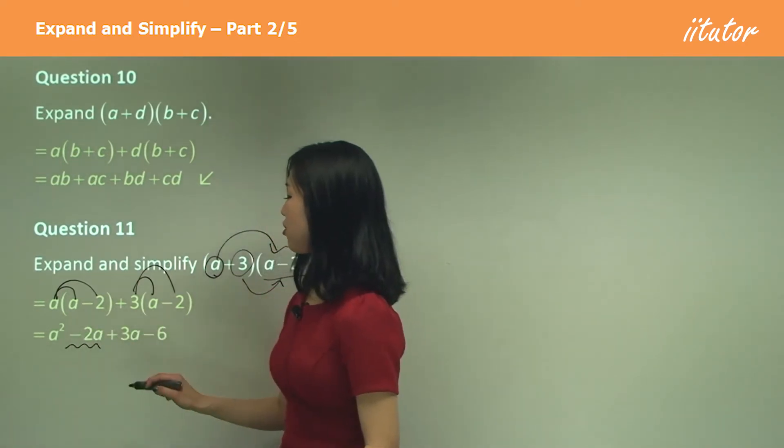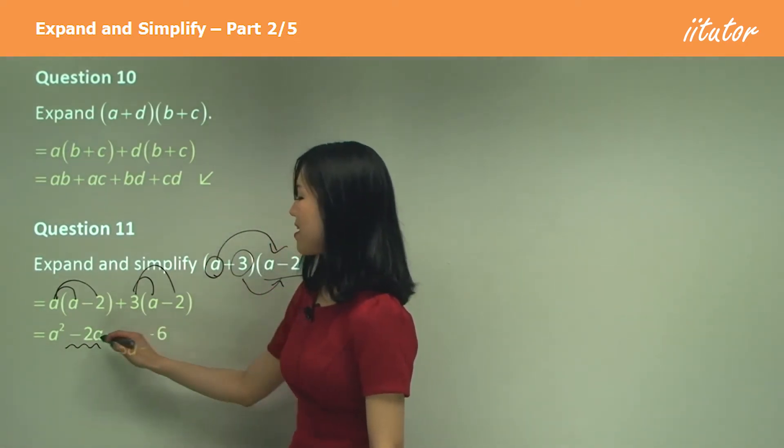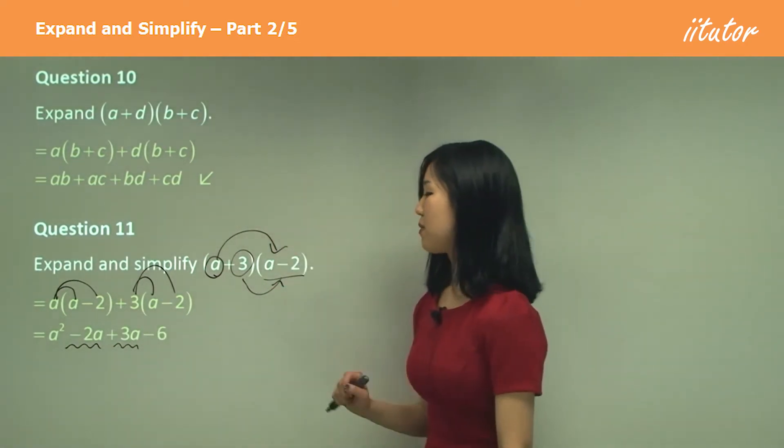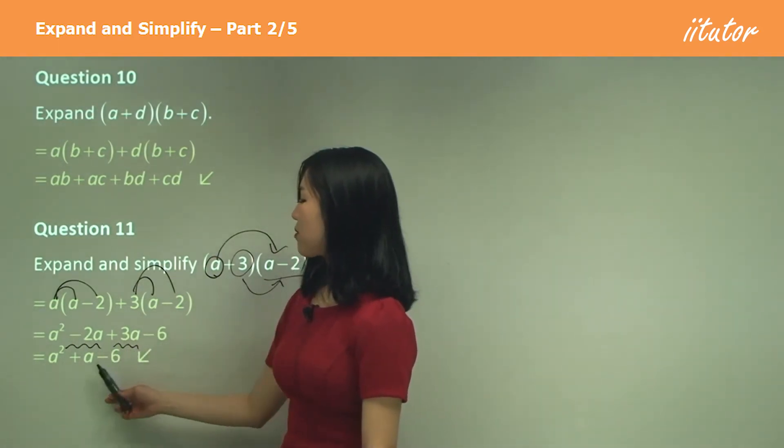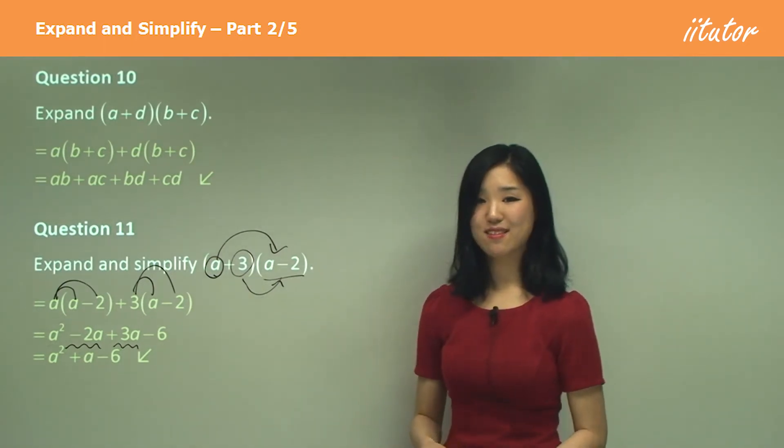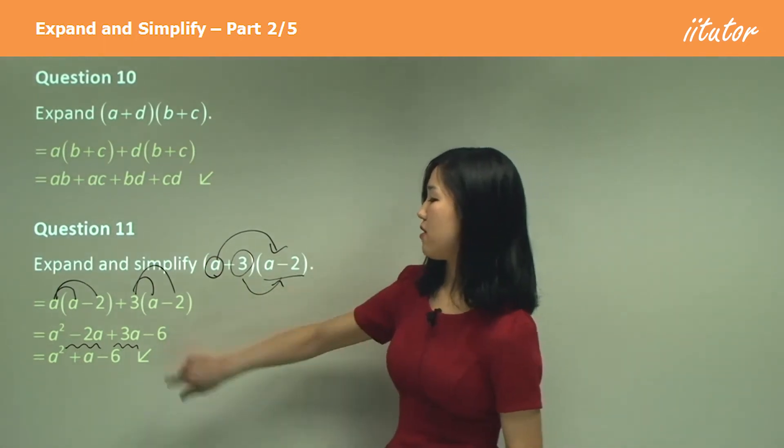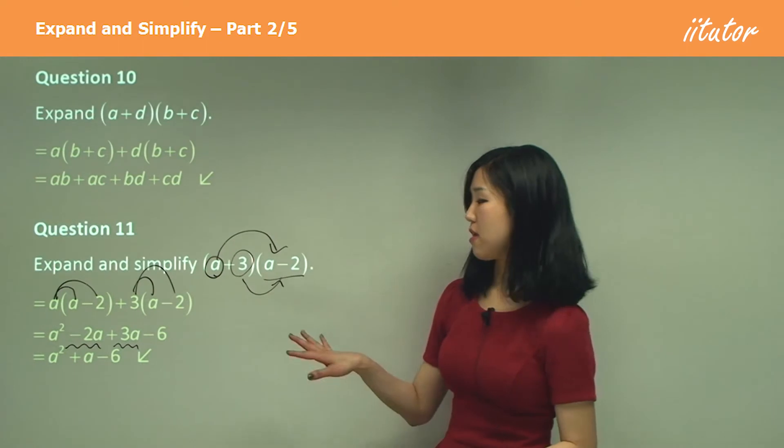A is common. So that's going to be my like terms. So we have A squared minus two A plus three A is just positive A. And then we have minus six at the end because we don't have any more like terms other than the A.